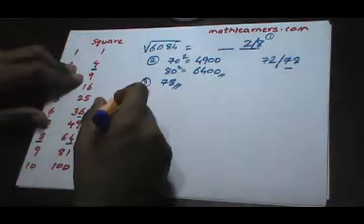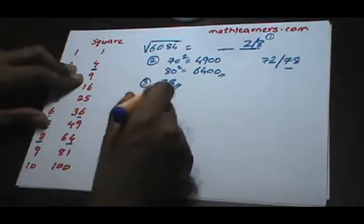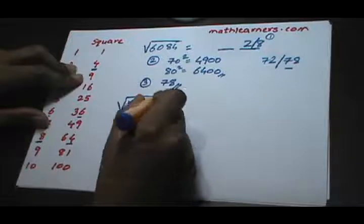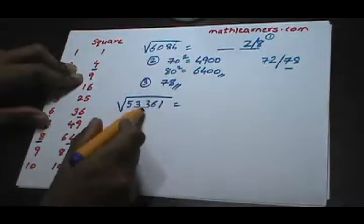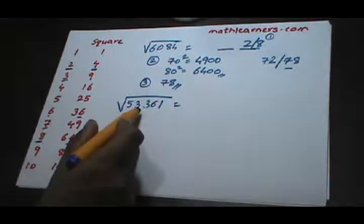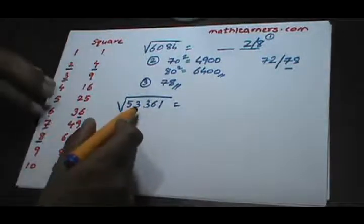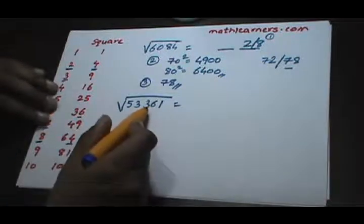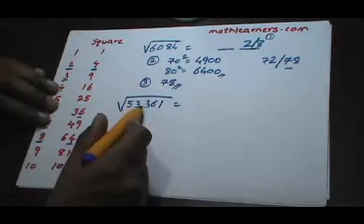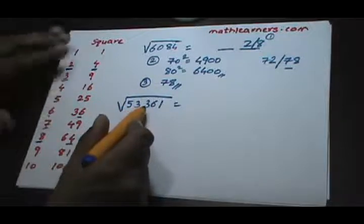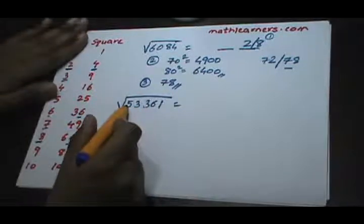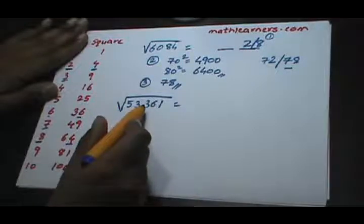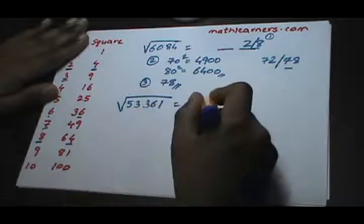Let's take another perfect square example. This number has 5 digits, which is odd, so the square root will have (n+1)/2 digits — since there are 5 digits, the square root will have 3 digits.